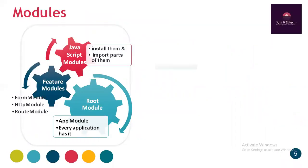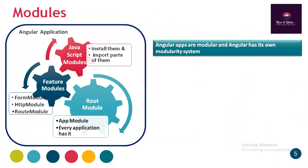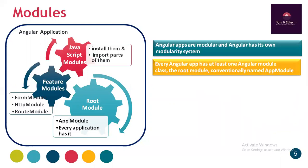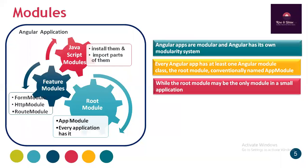Every Angular application is modular in nature and Angular has its own modularity system. Every Angular app has at least one module class — it is called the root module, and conventionally it is named as app module. Every application has it, whether that application is small or large. This module is called the root module or app module. While the root module may be the only module in a small application.